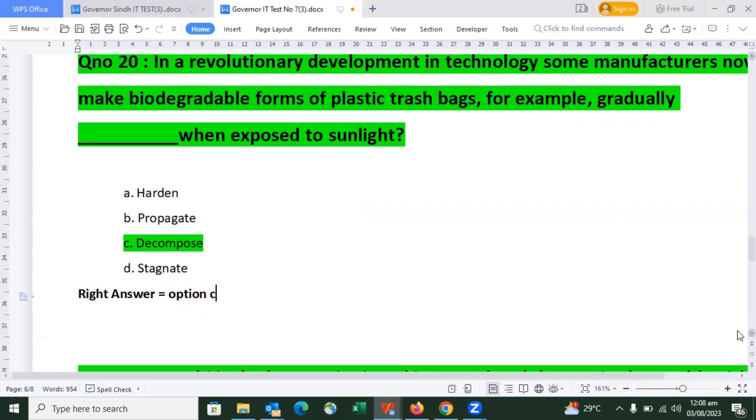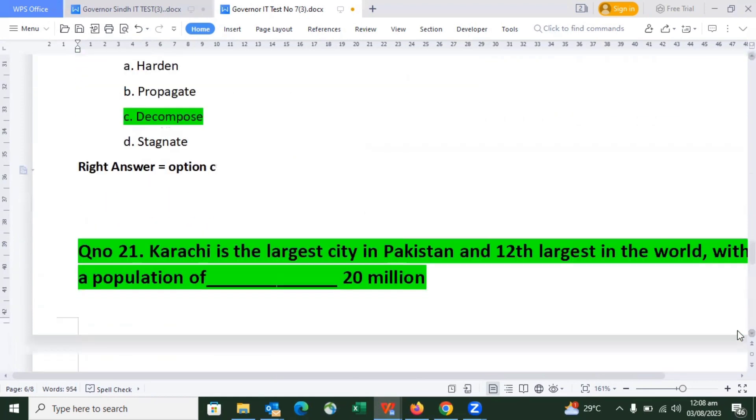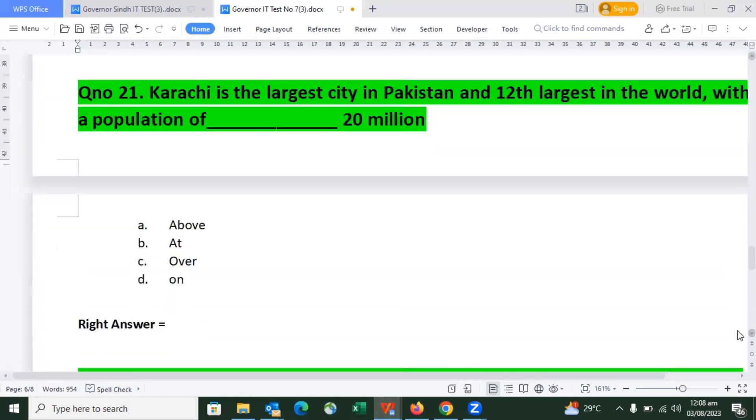Next question, option C as we discussed: Karachi is the largest city in Pakistan and 12th largest in the world with a population of over 20 million. Option C is the right answer.